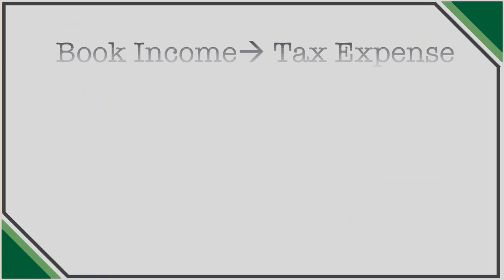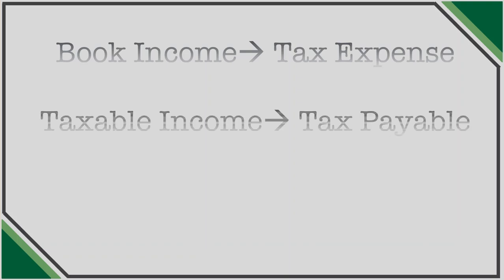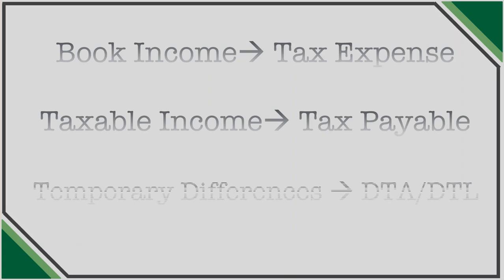Using basic matching principles, companies are required to book tax expense in the year to which the income is earned from a book perspective. Any amounts owed to the IRS are appropriately recorded as a liability until paid, and the differences in temporary items are recorded as deferred tax assets or deferred tax liabilities.